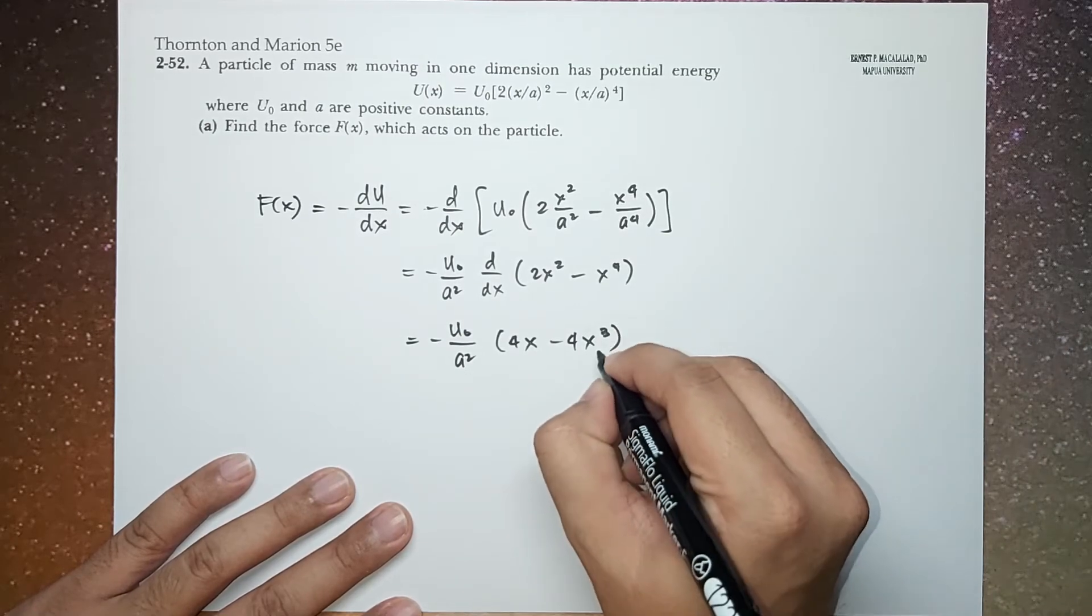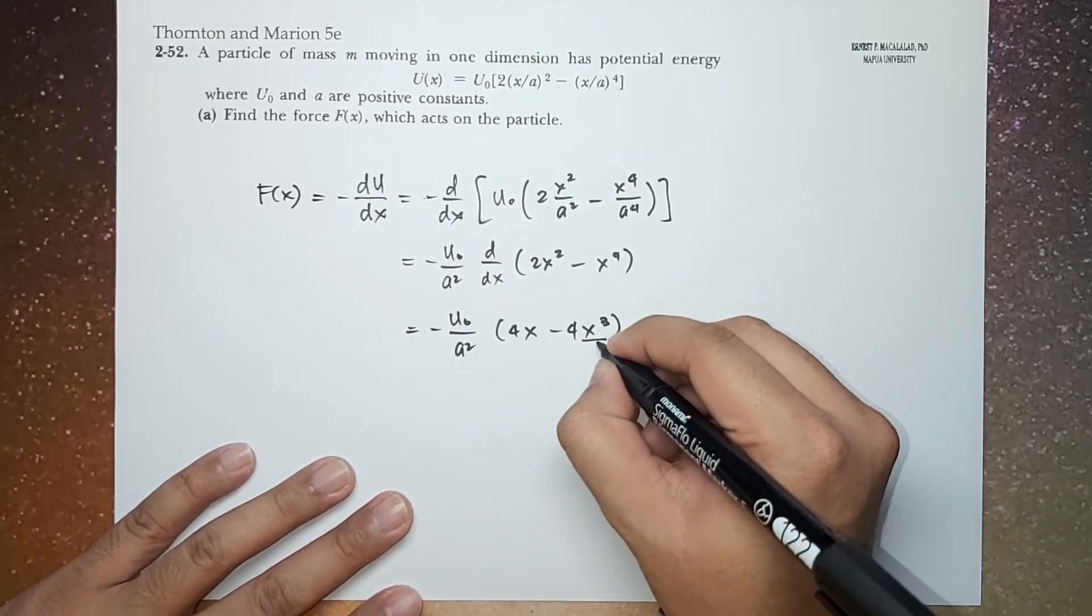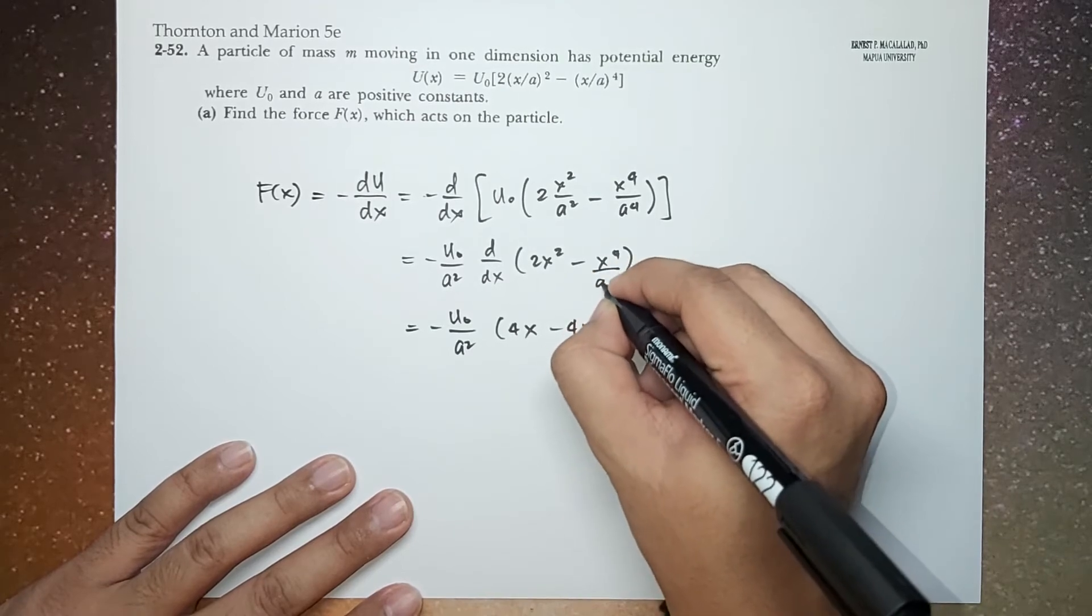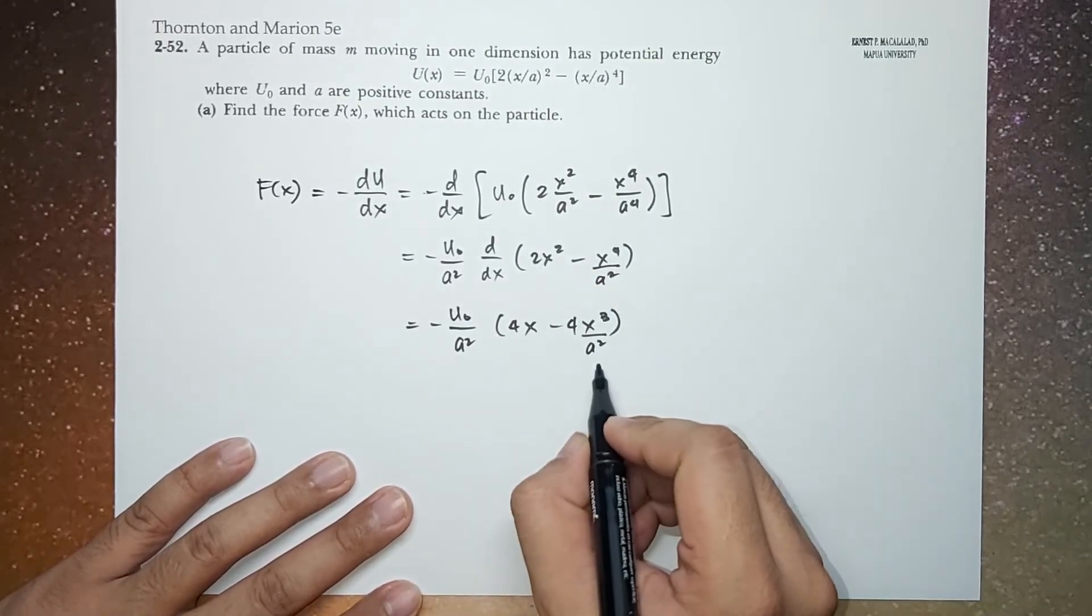And this would be over, should be over A squared. Yeah, this was A to the fourth.